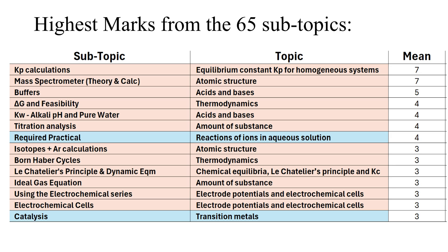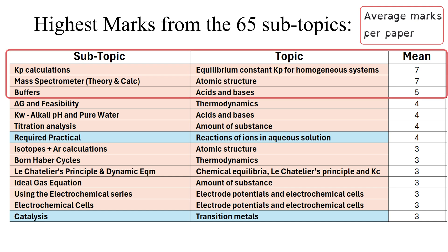The 15 topics that could be assessed on Paper 1 can be broken down further into subtopics. Of the 65 subtopics, the ones that typically carry the highest marks on average per Paper 1 are: Kp calculations and units (from the equilibrium constant topic) at seven marks on average; the mass spectrometer — both theory and calculations — also at seven marks on average; and in third position, buffer solutions — explanations and calculations. Four additional subtopics each carry about four marks on average per year.